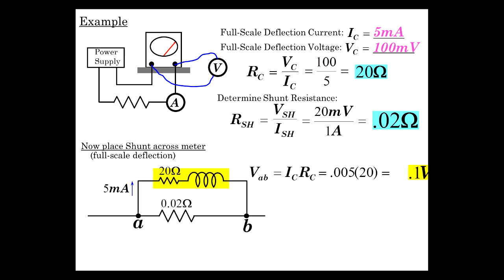So VAB, the voltage across there, is the coil current times the coil resistance. 5 milliamps, 20 ohms, .1 volts. So a tenth of a volt across there corresponds to 5 milliamps.